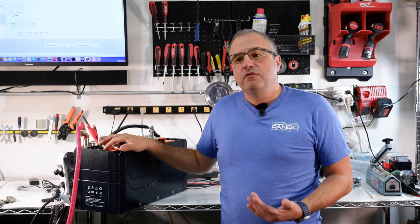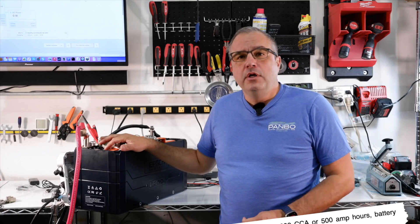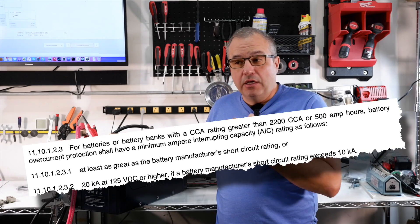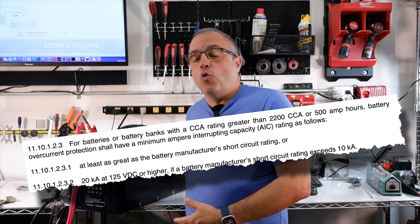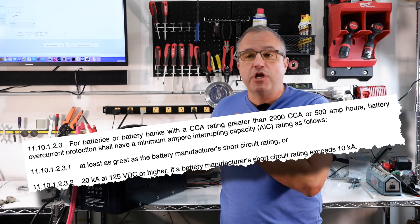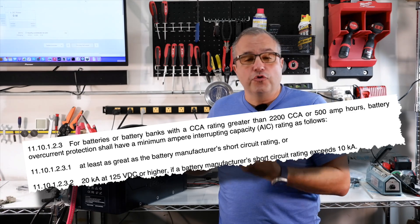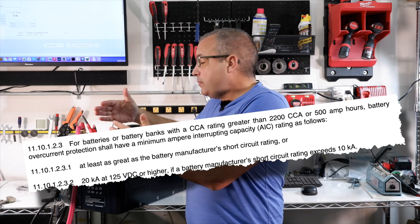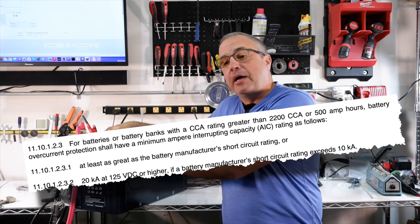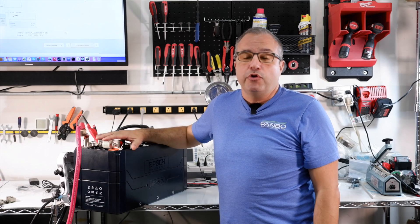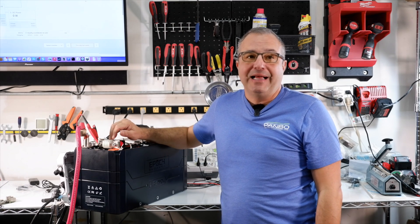ABYC's safety standards require a Class T fuse be used with a larger battery bank or a battery with the potential to generate more than a certain amount of short circuit current. Almost all lithium iron phosphate batteries are able to generate enough short circuit current that the only appropriate fuse would be a Class T fuse.